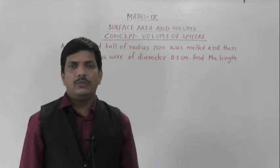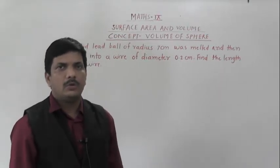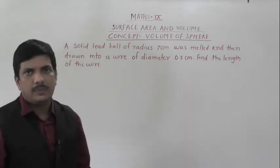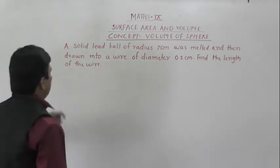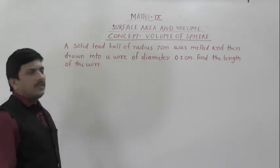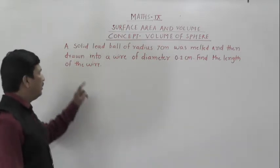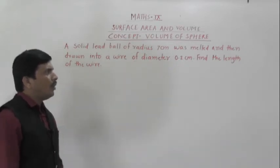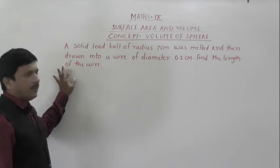Hello everybody. Today we are going to see some problems which depend on the concept of volume of sphere. We have already seen some examples based on this. The first problem is: a solid lead ball of radius 7 centimeters was melted and then drawn into a wire of diameter 0.2 centimeters. Find the length of the wire.